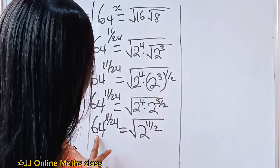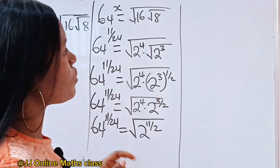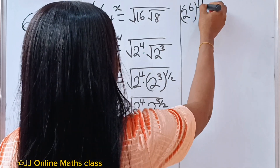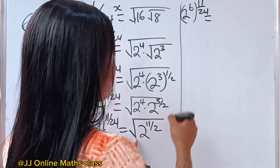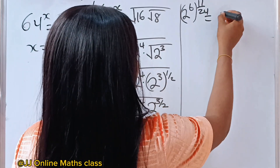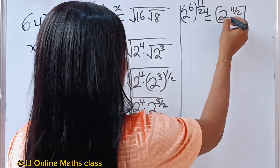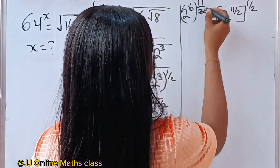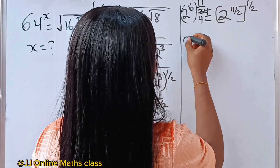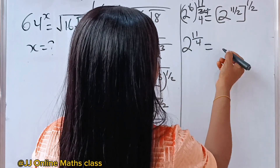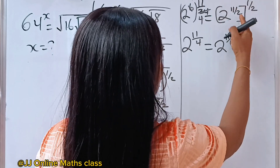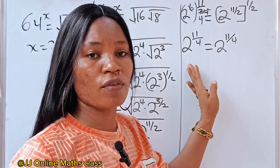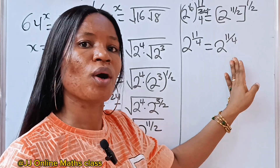From here, let's change 64 to base 2: that is 2 to the power of 6, raised to the power of 11 over 24. The square root of 2 to the power of 11 over 2 is written as 2 to the power of 11 over 2, raised to the power of half. On the left, 6 divided into 24 gives 4, so we have 2 to the power of 11 over 4. On the right, 11 over 2 times 1 over 2 gives 11 over 4. This proves the solution is right since the left-hand side equals the right-hand side.